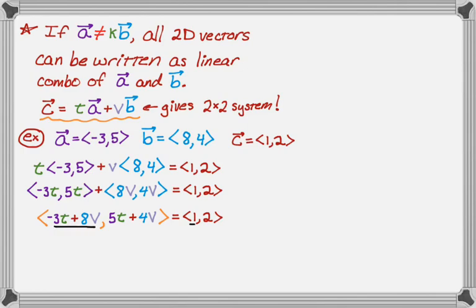The first components should be equal gives me this equation, negative three T plus eight V is equal to one. And then their second components should be equal, which gives me a second equation. So five T plus four V is equal to two. And now what I want to do is solve this by really whatever method you want. I actually like to use Kramer's rule, but not everyone knows that. So I'm going to solve it by elimination instead.